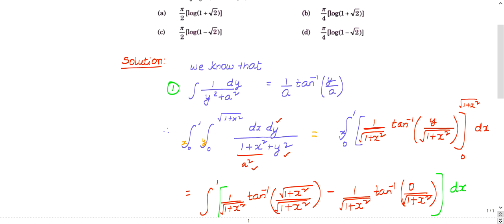Just compare this with the above formula, the given question. This is the question, right? How you compare: dy and dy is there, I have ticked with red color. So you can see this is dy, this is dy, and y square is there. Here also there is a y square. Then instead of a square, here it is 1 plus x square. So what I can say is a square is nothing but 1 plus x square.